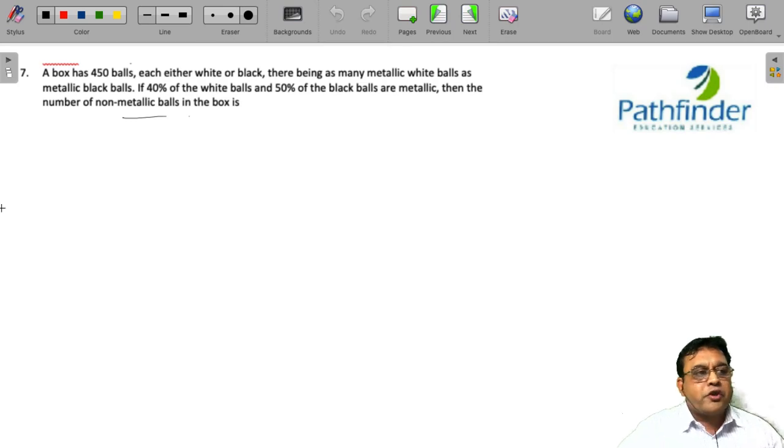CAT 2021 Slot 2, Question Number 7: A box has 450 balls, each either white or black, there being as many metallic white balls as metallic black balls. You have to be very careful in dealing with CAT questions.